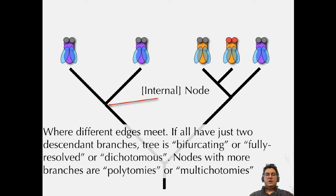We have an internal node where different edges meet. If all edges have two to three branches, or if all nodes have degree three, the tree is bifurcating, fully resolved, or dichotomous. Nodes with more branches are polytomies or multichotomies. We often assume that the true history has one species becoming two, not one species becoming three. If it becomes three, we think it happened as one split and then shortly thereafter another split.